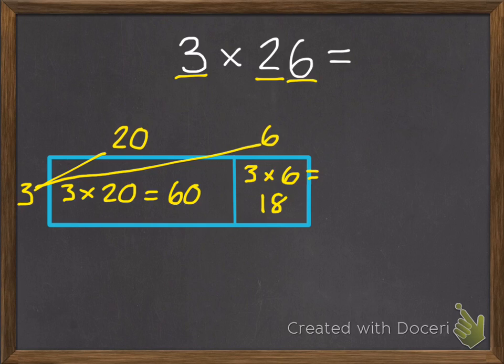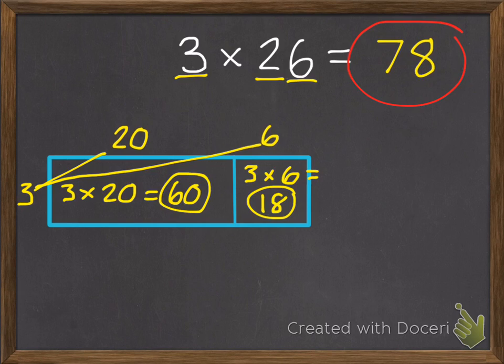Then I just have to add the two different sections. 60 plus 18 equals 78.